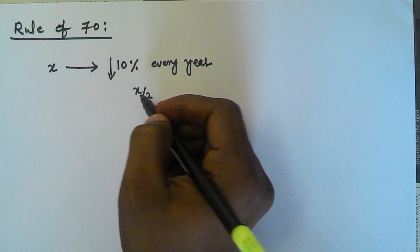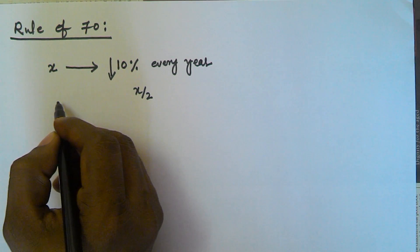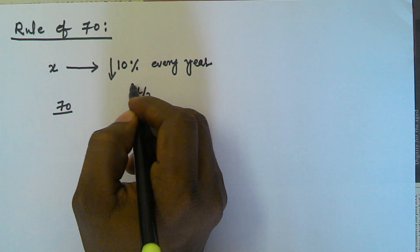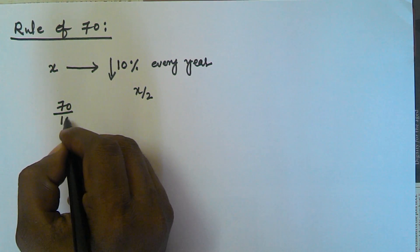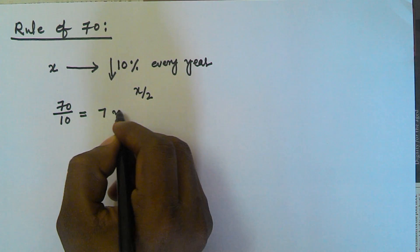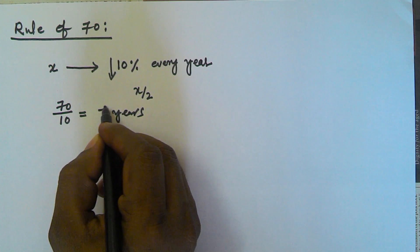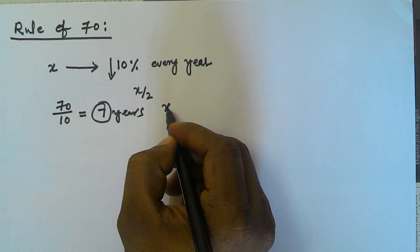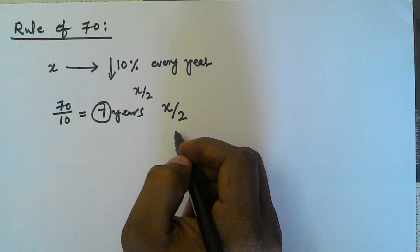To find those years, we will divide 70 by the percentage by which its efficiency is reduced every year — that is 10%. So we will get 7 years. After 7 years, the efficiency will become x divided by 2.